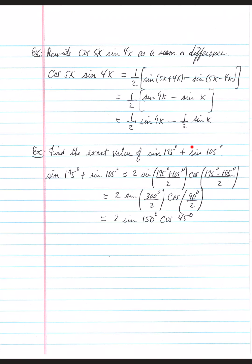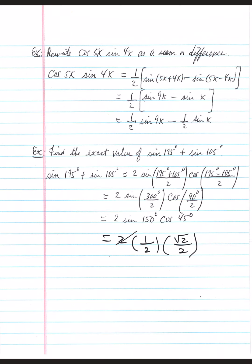That's a sum written as a product. Now evaluate: sine(150°) from the unit circle — the y-coordinate at 150° is 1/2. Cosine(45°) — the x-coordinate is √2/2. So: 2 × (1/2) × (√2/2) = √2/2.